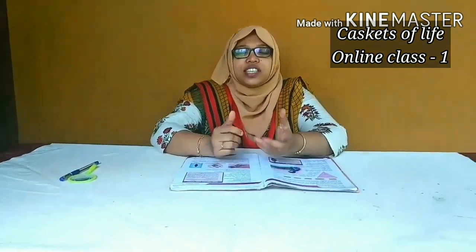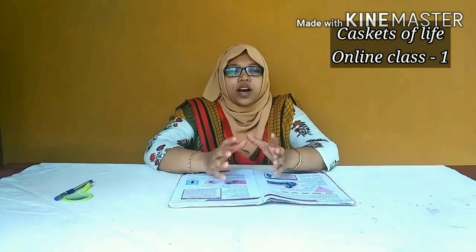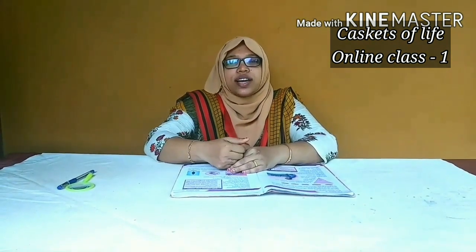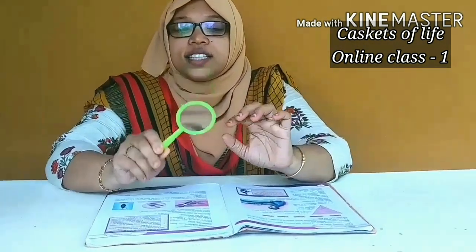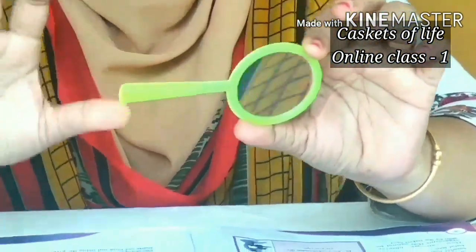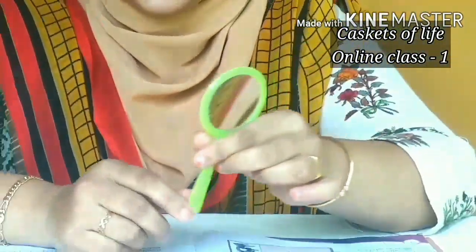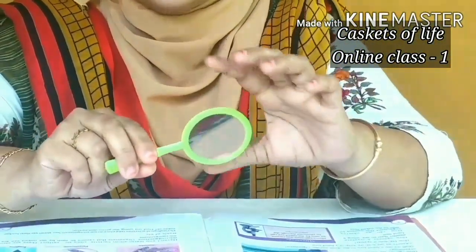Have you ever seen organisms which are smaller than ants? You can see that there are organisms even smaller than ants. How can we see those organisms that are smaller than ants? Is there any equipment to see such organisms? Yes — this is a hand lens. This hand lens is used for observing such minute organisms.